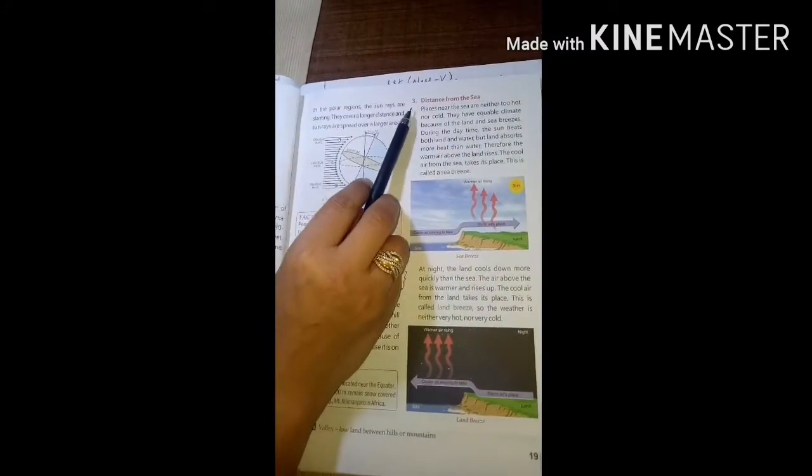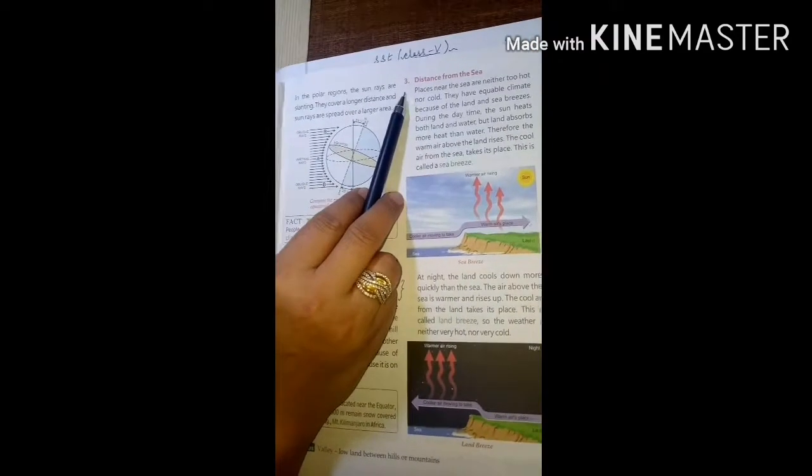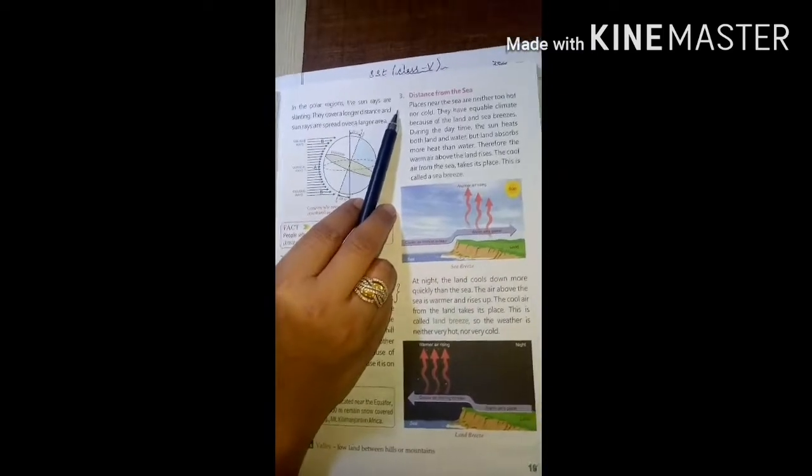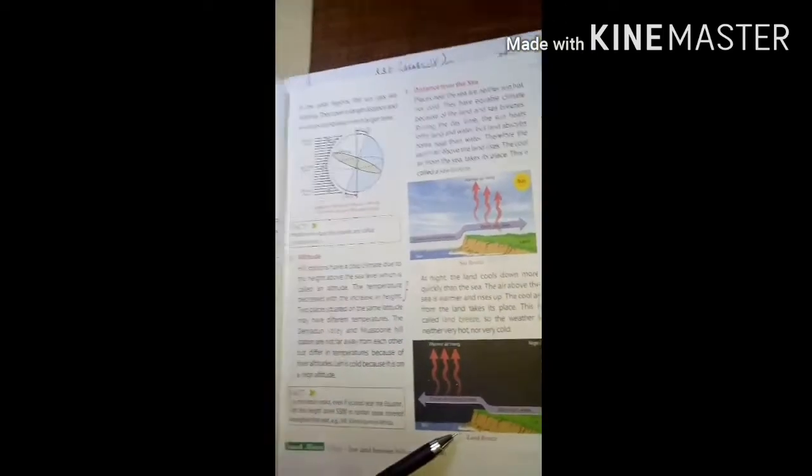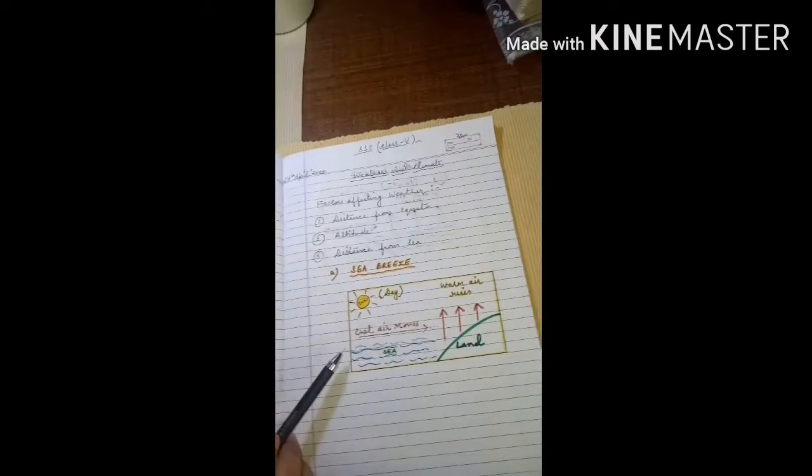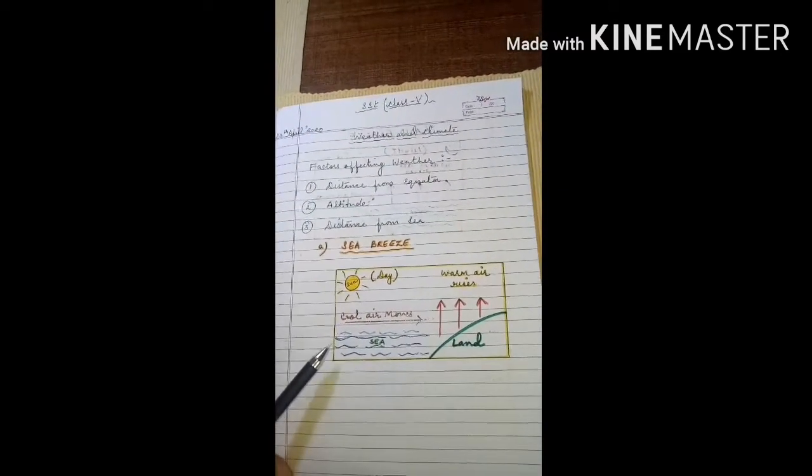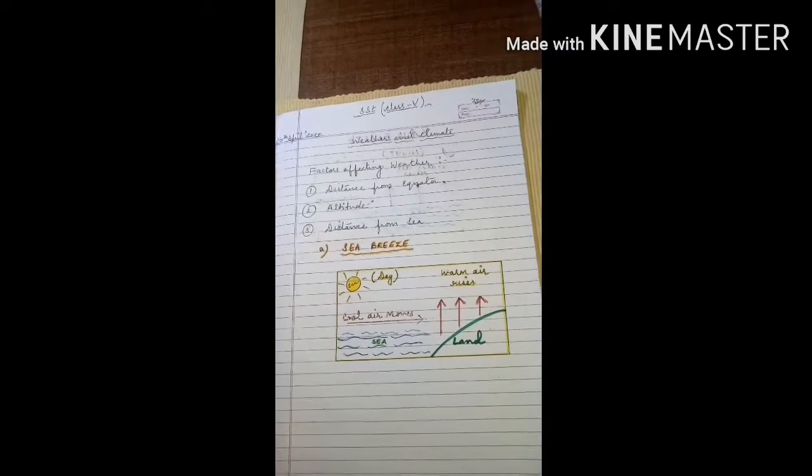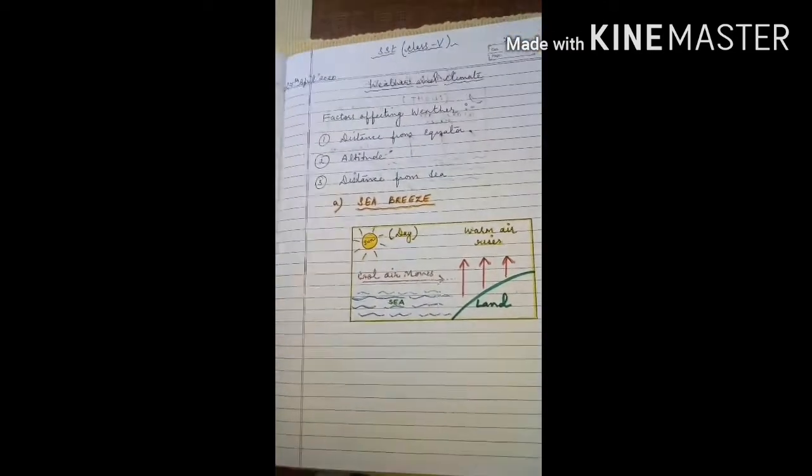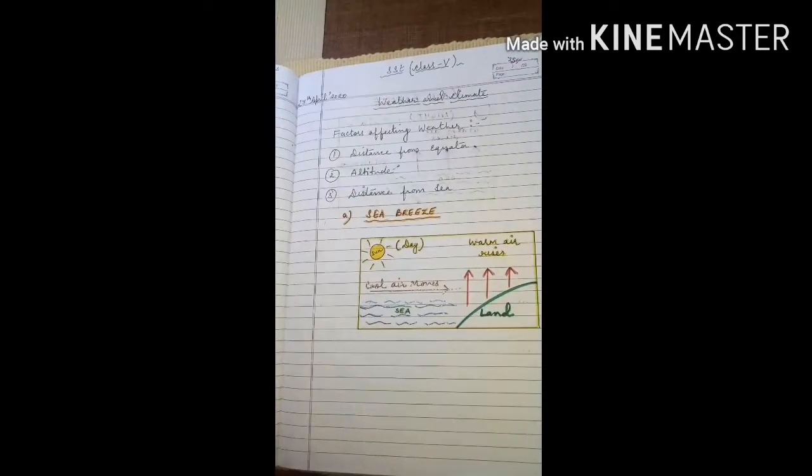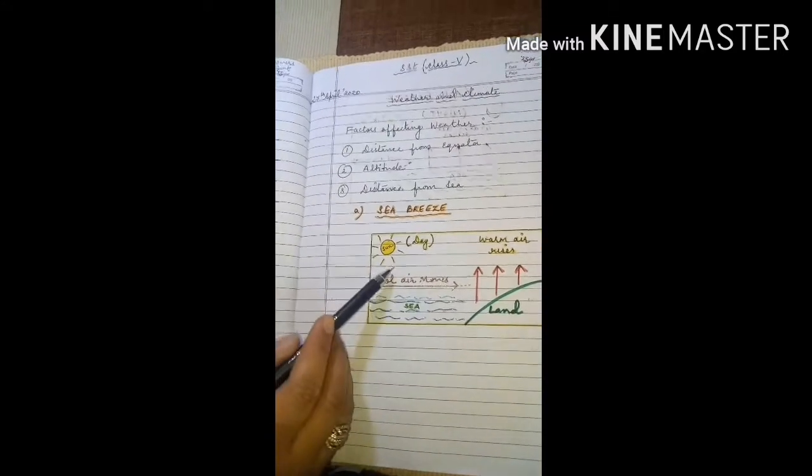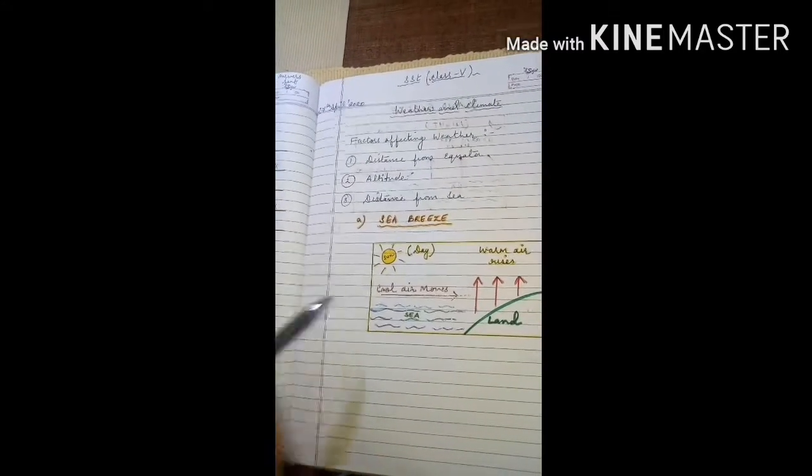Let's talk about distance from the sea. While we discuss about the distance from the sea, we will be talking about two concepts. One, the sea breeze and two, the land breeze. I will show you here with a diagram, and this diagram you will be drawing in your copy also. The places near to the sea are neither too hot nor cold. They have equable climate. Equable climate means neither too hot nor too cold. And this happens because of the land and sea breeze effect near the coastal areas.